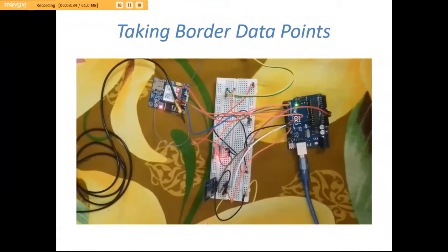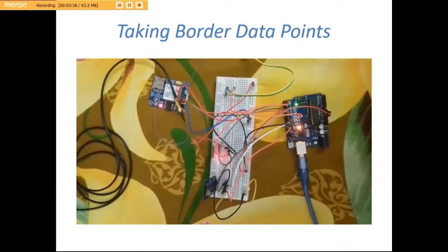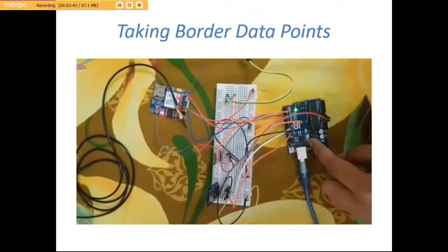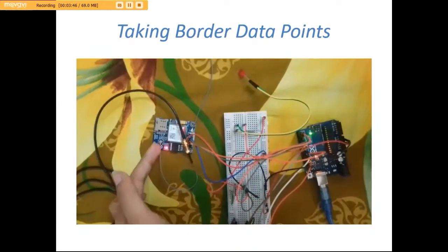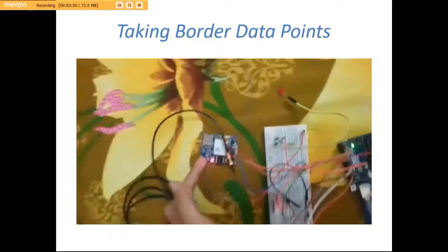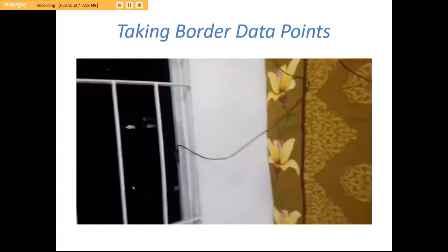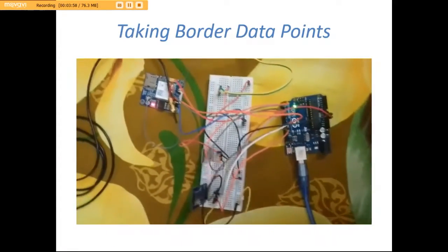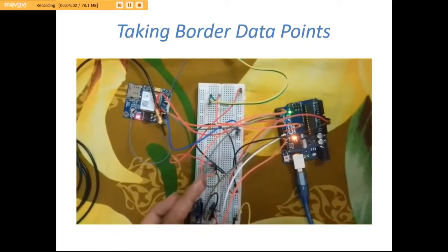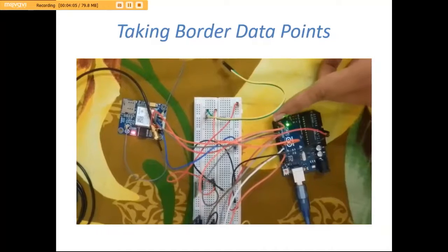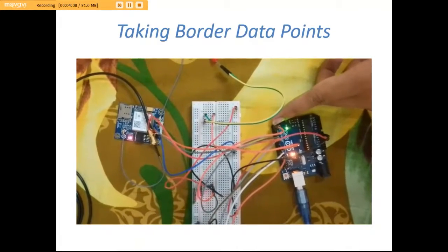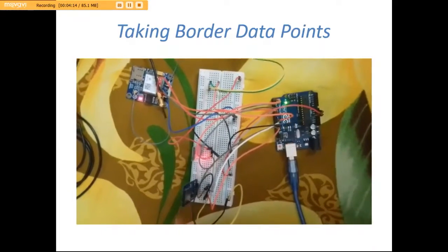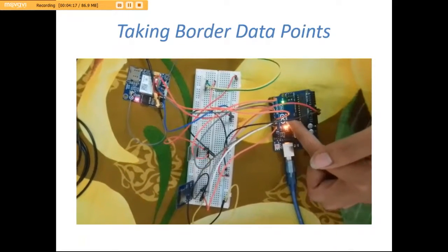This is Sadman Sakib Ahbab, student ID 1306002. I am going to demonstrate our hardware setup. This is our Arduino Uno, and this is our GPS module SIM808. I have put the antenna near the window so that it can get a clear GPS signal. This is our Bluetooth module — it is connected to the default hardware serial communication pins 0 and 1 of Arduino. This is the SD card adapter, connected to the Arduino's default SPI communication pins.